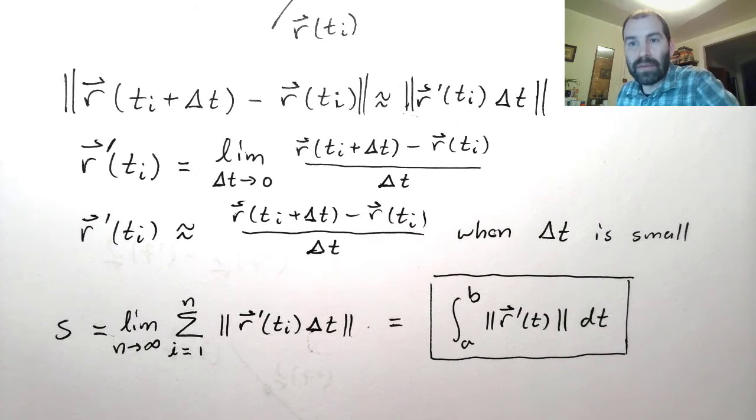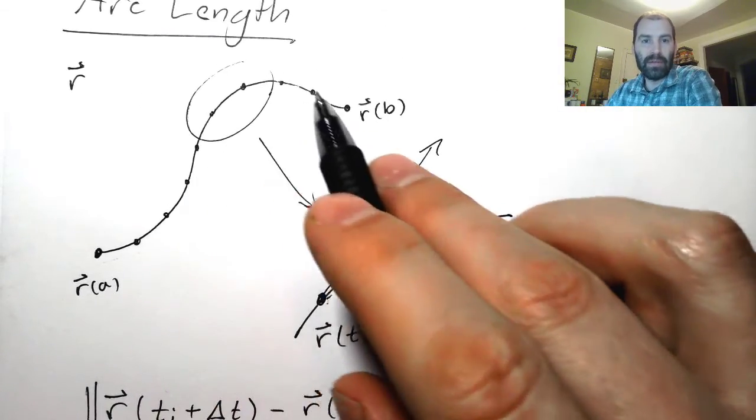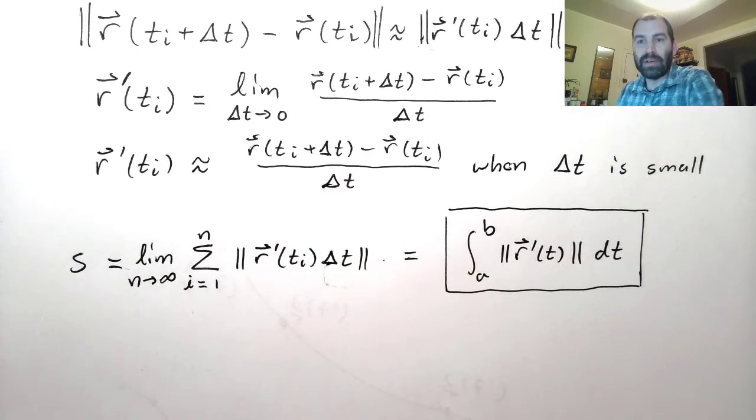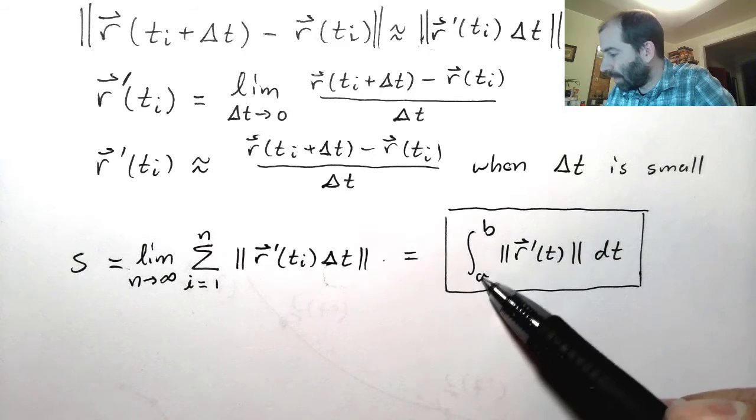If I want to find the length of a curve between r of a and r of b, as we've specified here, the formula is just this. We just integrate the magnitude of the derivative vectors as t ranges from a to b.